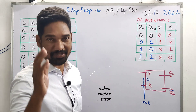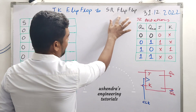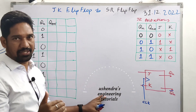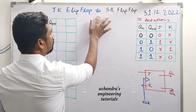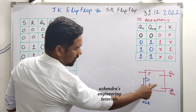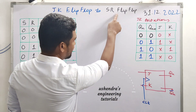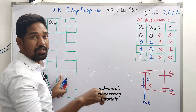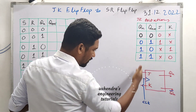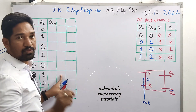Flip-flop conversions - today we look at an important conversion: JK flip-flop to SR flip-flop. We'll go through a step-by-step procedure. The available flip-flop is JK and the destination flip-flop is SR. We need to introduce a combinational circuit to convert JK to SR.